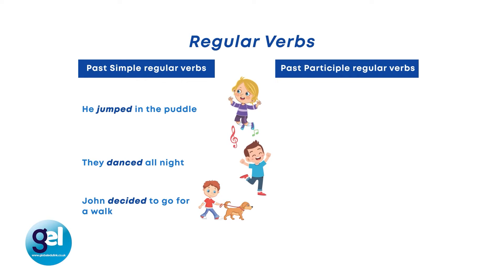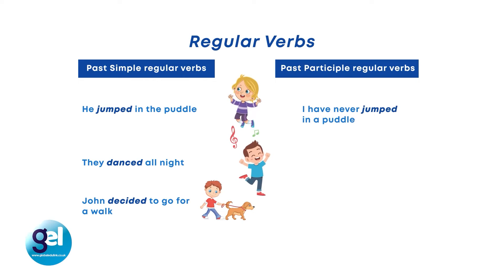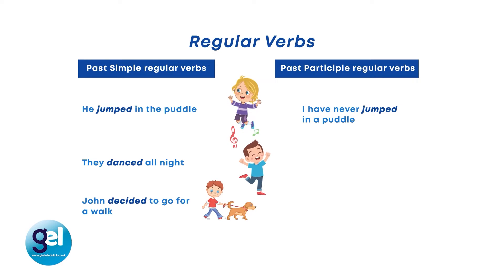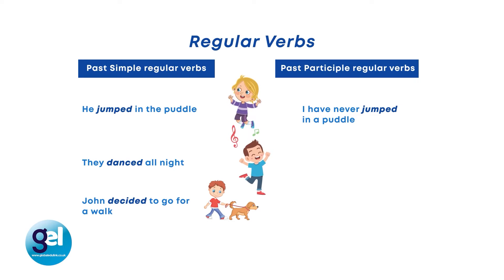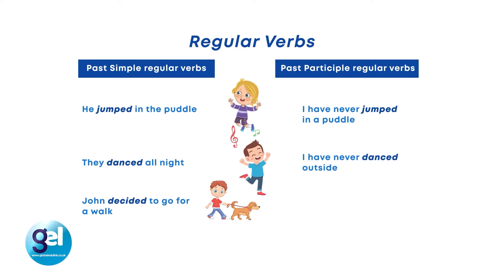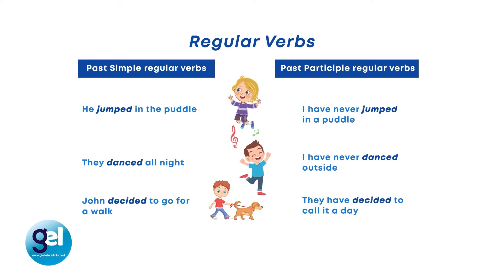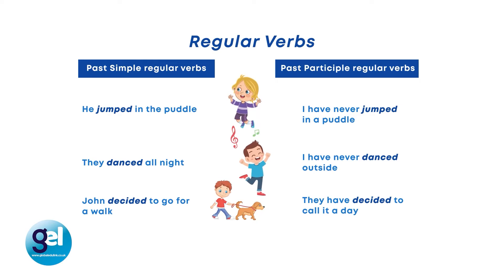Past participle regular verbs: 'I have never jumped in a puddle.' We've changed the tense — it's no longer past simple; we have the present perfect, but 'jumped' is exactly the same, with ED added. 'I have never danced outside' — again, ED is added to 'dance' to make a present perfect sentence. 'They have decided to call it a day' — another example of a past participle, where 'decide' has ED added.